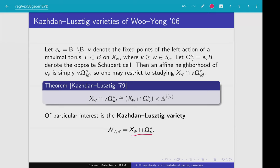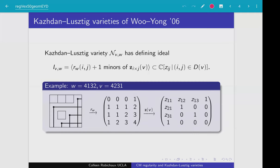Using the Bruhat decomposition of these Schubert varieties, it's going to happen that the Kazhdan-Lusztig variety is always going to be indexed by permutations V and W, where V is always greater than or equal to W in the Bruhat order. These varieties have very nice defining ideals. In their paper, Wu and Yang give an explicit description of the generators of this ideal. Let me go over an example to illustrate how we can compute these generators.